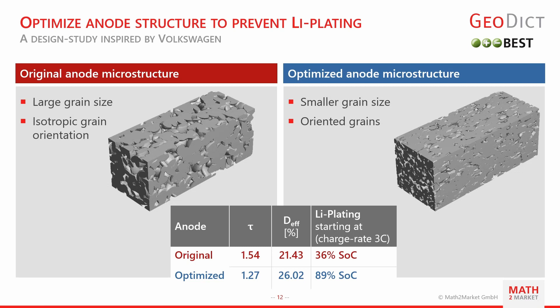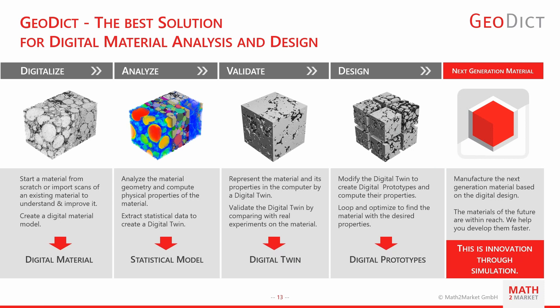Another example: designing a graphite anode to reduce lithium plating, a degradation mechanism that can be dangerous — in the worst case forming lithium dendrites that penetrate the separator. With an original irregular grain orientation, the effective diffusivity was 21%. With an optimized microstructure using oriented grains, diffusivity increased, and lithium plating at a 3C charge rate only starts at 89% state of charge.